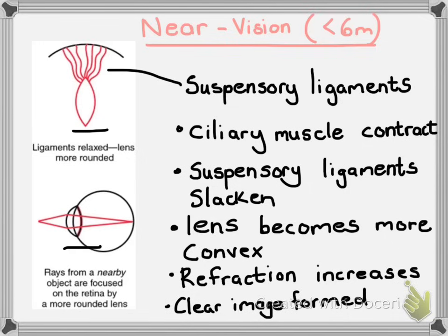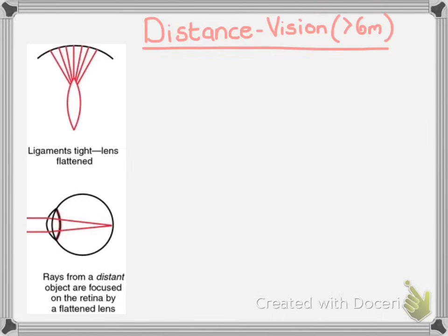Finally, you want to mention that a clear image is formed on the retina. Whenever you do explanations like this, you always want to round your answer off by getting to the ultimate goal, which is to create a clear image. That was looking at objects less than six meters away, but we are also going to have to compare it to when you are looking at distant objects.